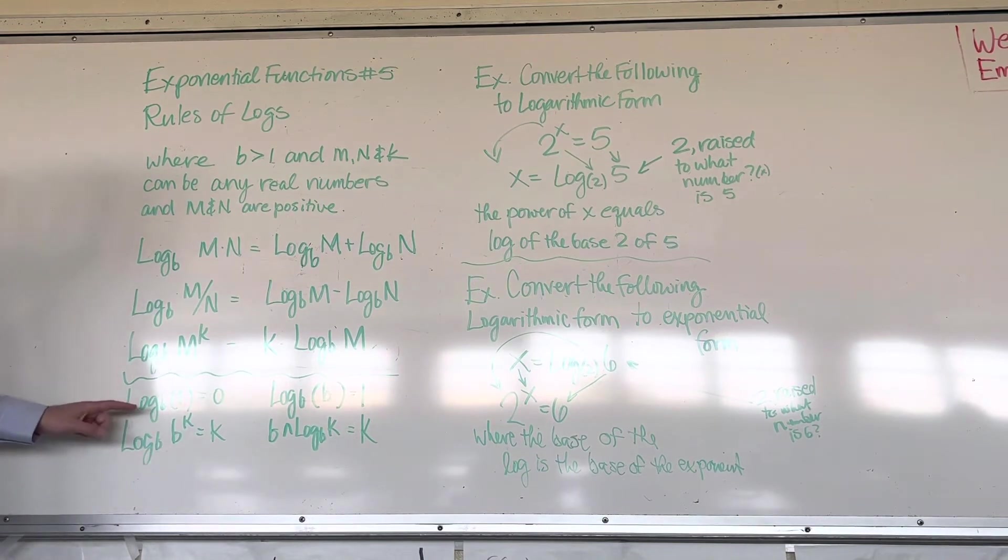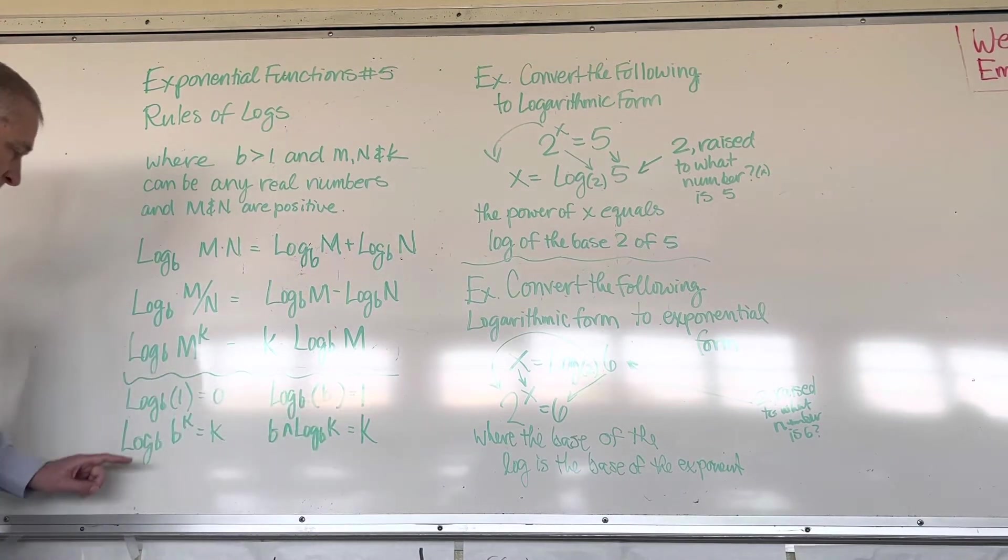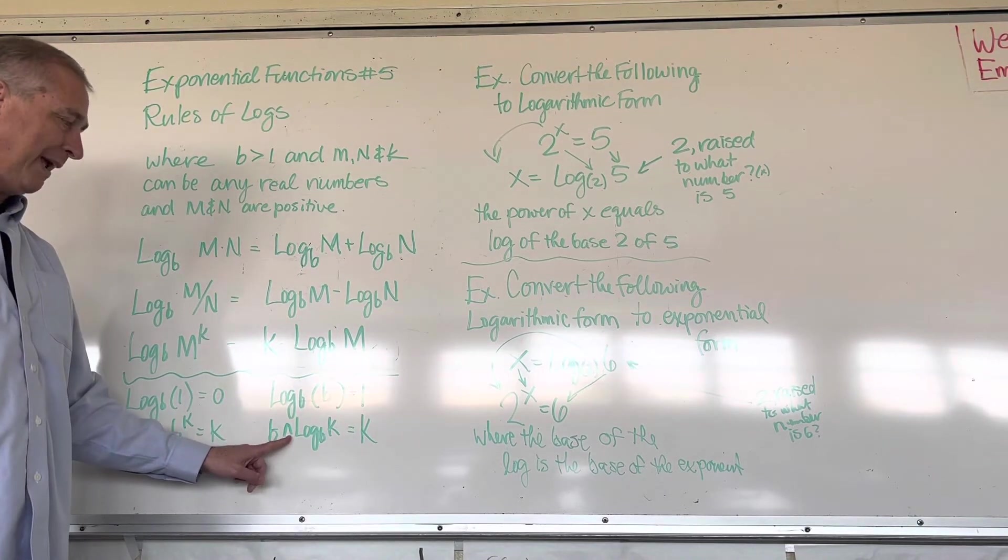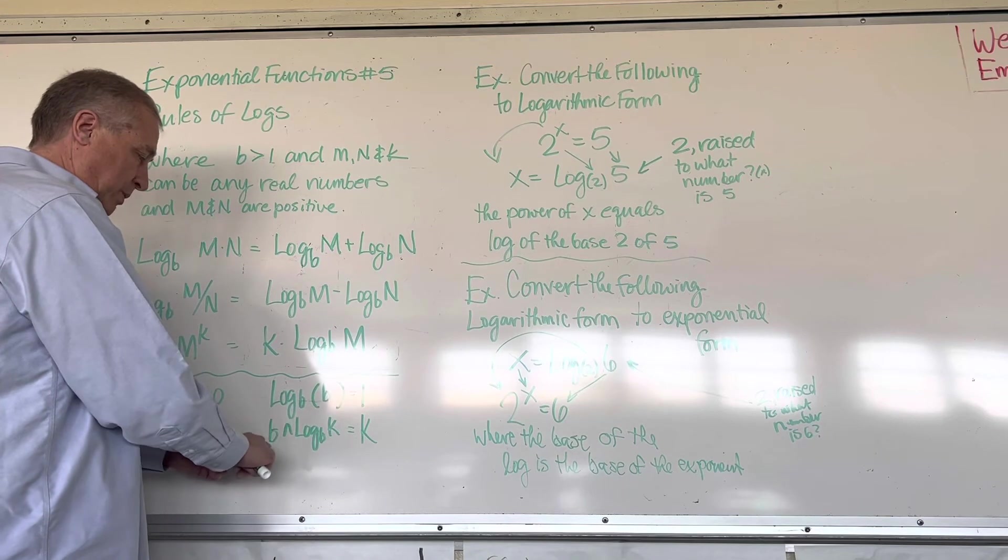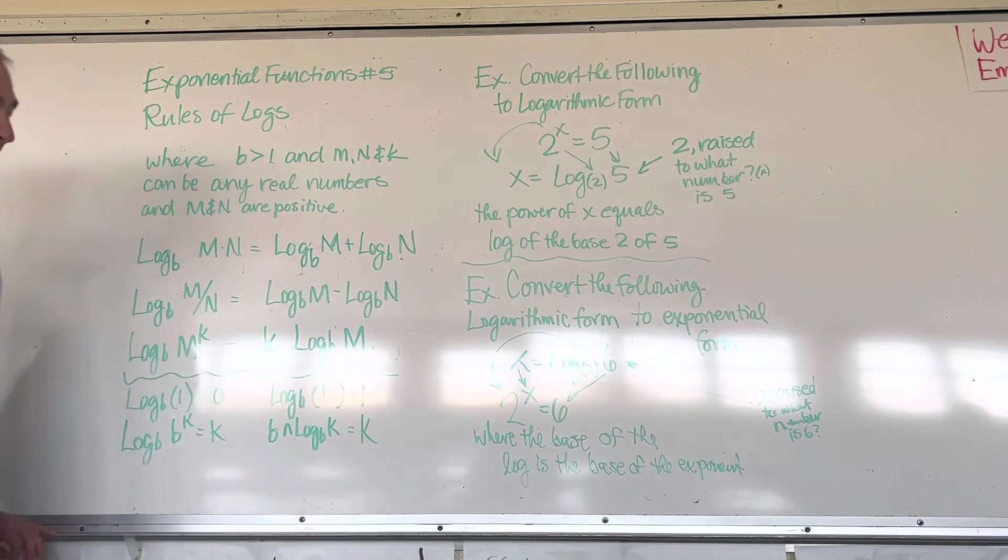So here's another one. Log base B of one is zero. Log base B of B is one. Log base B of B to the K power is equal to the power K. Strange until you start applying it. B, and this is a carrot here, raised to the power. So this whole thing is up in the superscript here. B raised to the power log base B of K is equal to K. So that's all a little crazy right now.